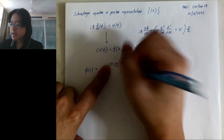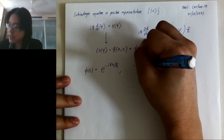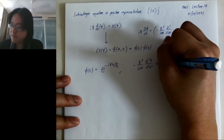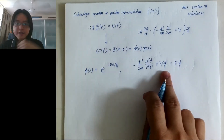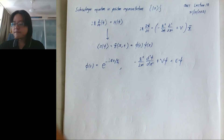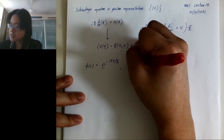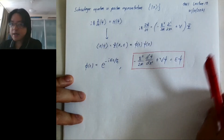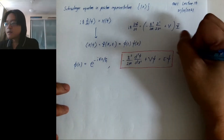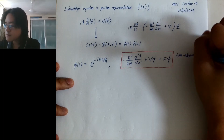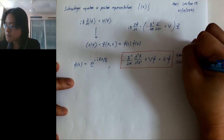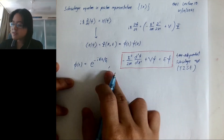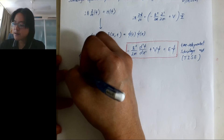The second ODE depends on the potential V - we haven't specified what V is yet. For different kinds of potential energy, we will have different solutions. This second equation is what we call the time-independent Schrödinger equation. The first part with e^(-iEt/ħ) is the time-dependent part.